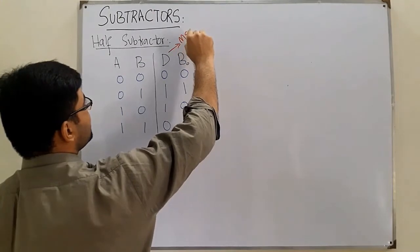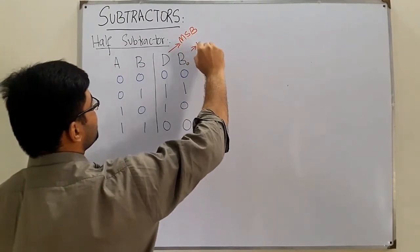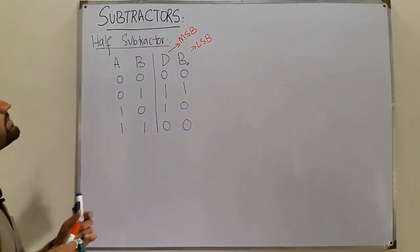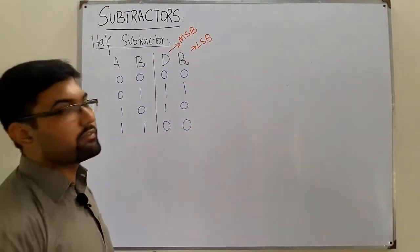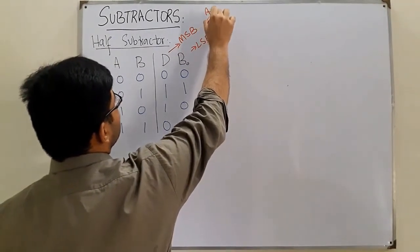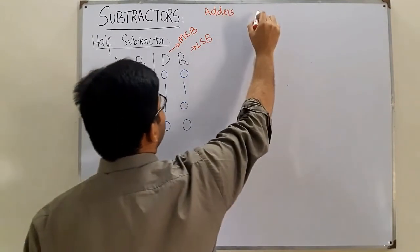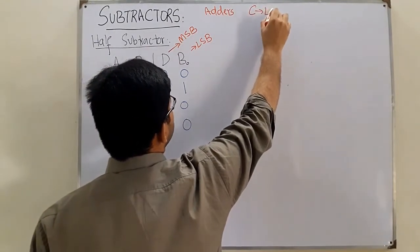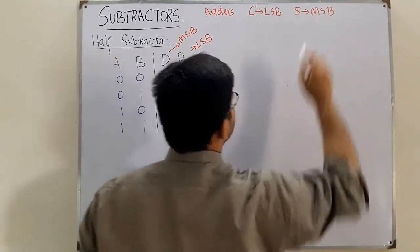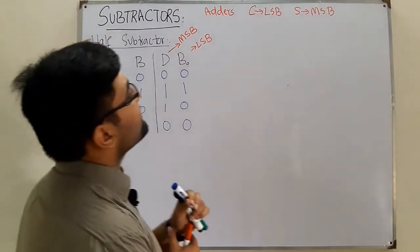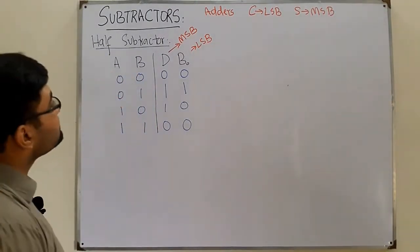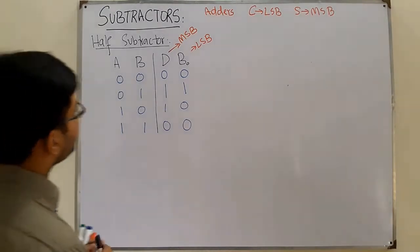A correction from the adders video: in adders, the carry is the least significant bit and the sum is the most significant bit — not the other way around. Similarly here, the difference is the most significant bit and the borrow is the least significant bit.